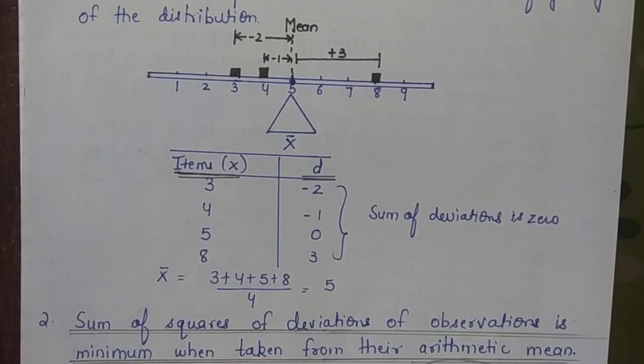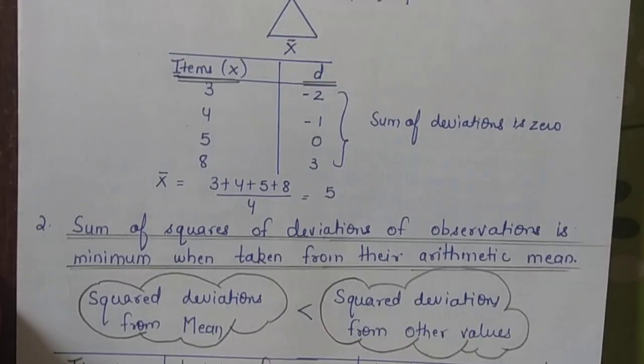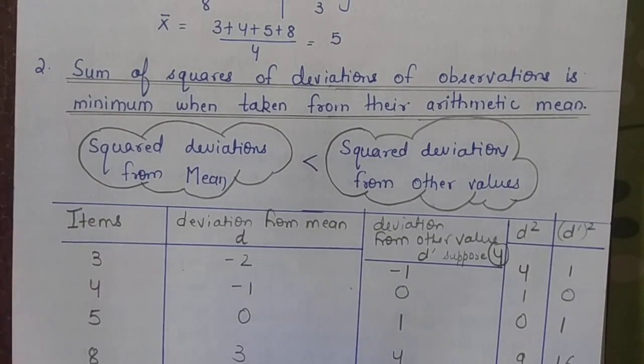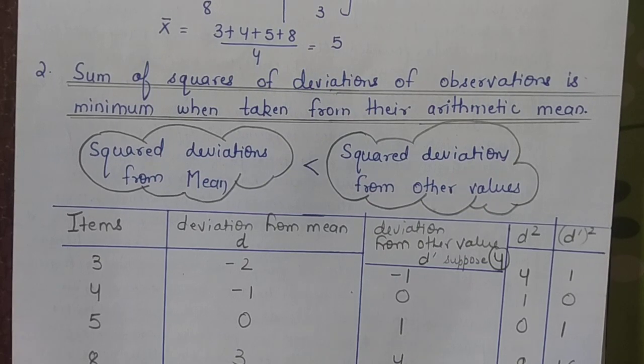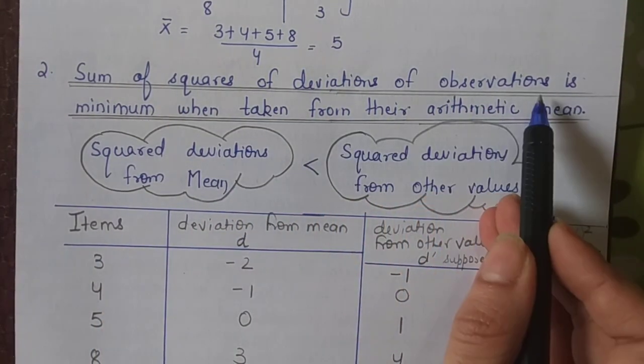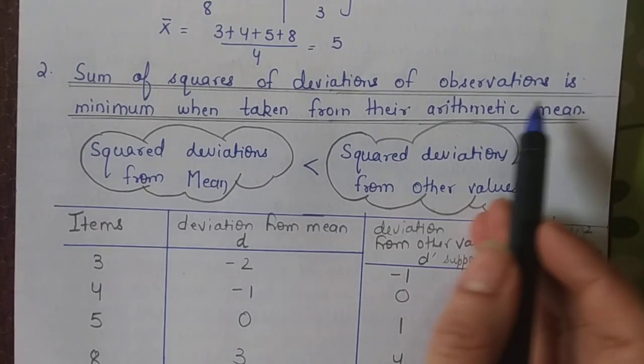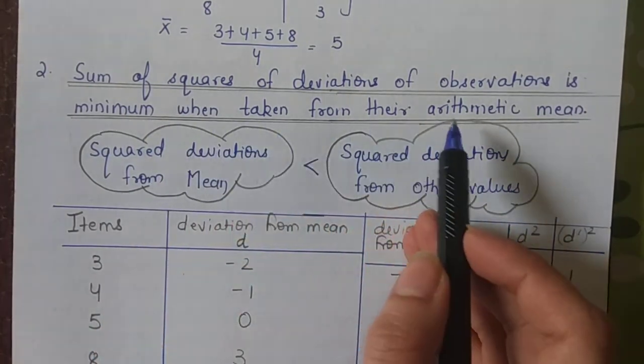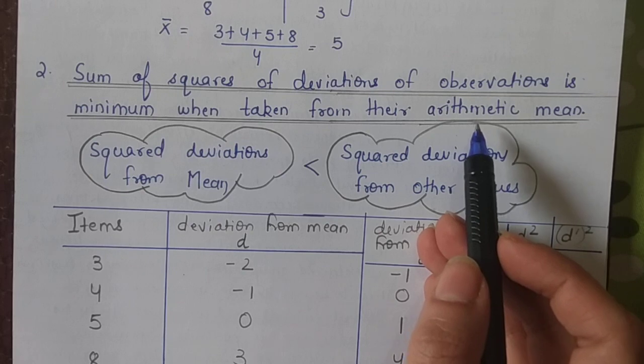So I hope this first property is clear to you. Now the second property is based on the first property, which says sum of the squares of deviation of the observations from mean is minimum when it is taken from the mean.